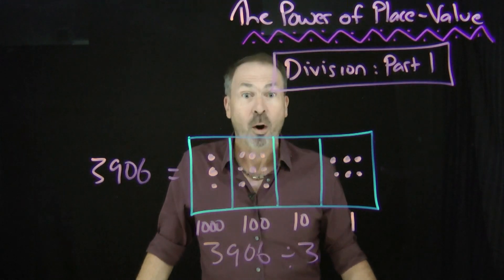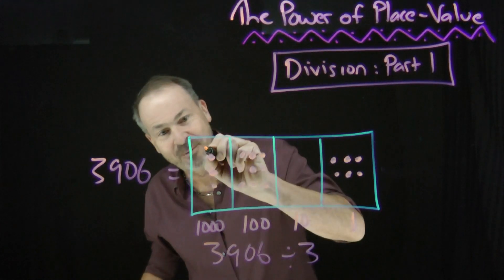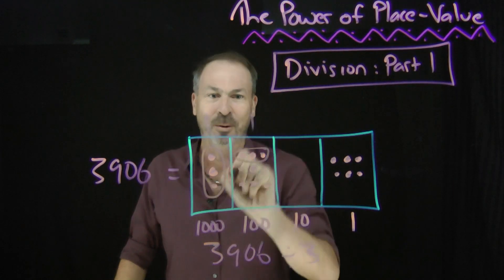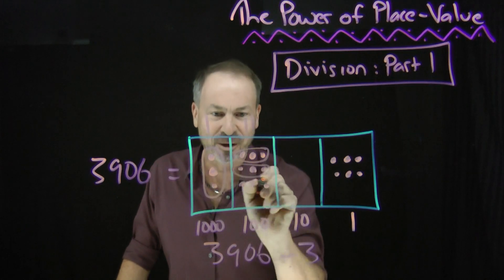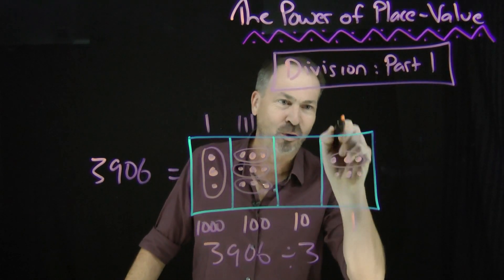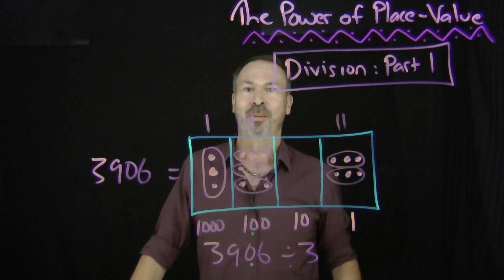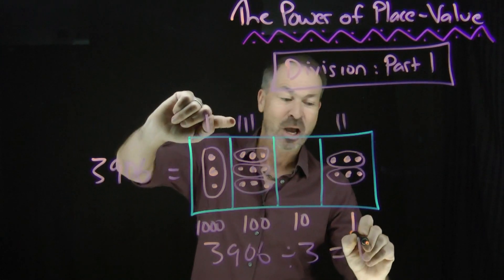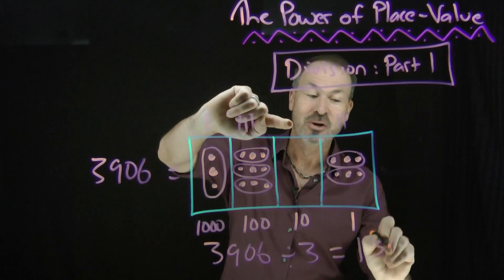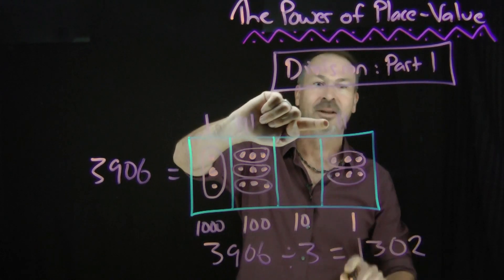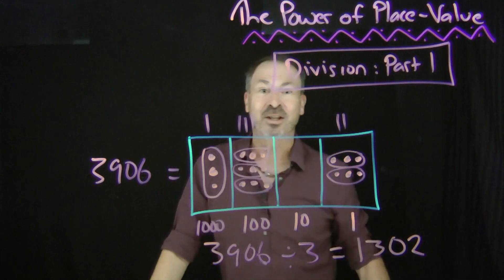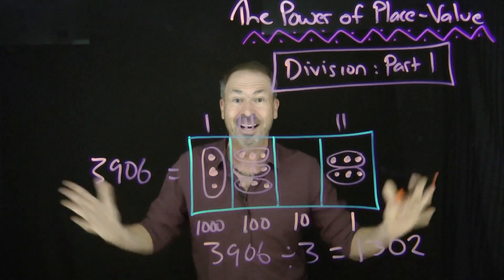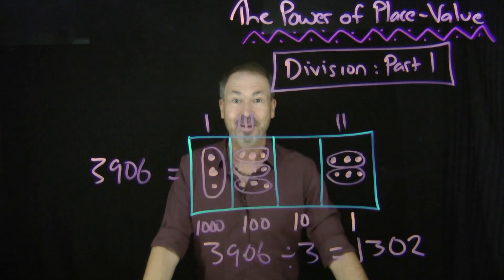Look at this picture and ask: what got tripled? I can see right here a dot got tripled, and a dot here got tripled, and a dot there got tripled, and a dot here got tripled, and over here a dot got tripled, and another dot over there got tripled. I see one dot in the thousands place, three dots in the hundreds place, no dots in the tens place, and two dots in the ones place got tripled. One thousand three hundred and two is what got tripled to give the answer three thousand nine hundred and six. We've just done division with a picture.